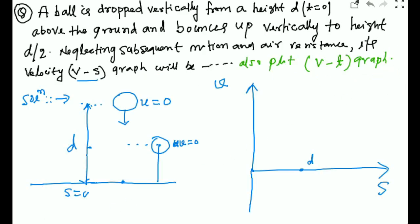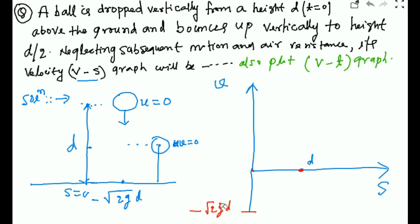At displacement d=0 (ground level), the velocity is −√(2gd). Since v² = 2gd, if we plot velocity versus displacement it looks like a parabola. So you draw a parabolic curve from the initial point down to the ground. This is the first part of the graph when the ball strikes the ground.